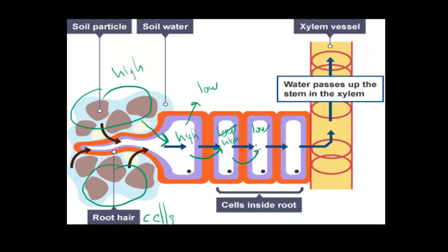so water will move again to the next cell. This one from low will go again to high. This one here will have low and water will move in again. So we have like a cascade of events, a domino effect, making the water move from one cell to the next. The water at the end will enter the xylem vessel.